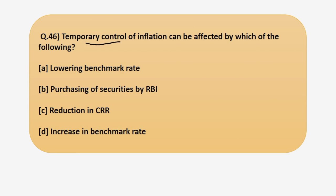The question says: temporary control of inflation can be affected by which of the following? Four options have been given to you and you have to tell me that out of these 4 options, which option can control the inflation? That is, if inflation is high in the economy, then by implementing which of the following options could a government control the inflation? Let's look at it one by one.